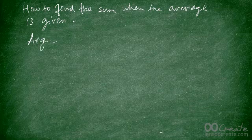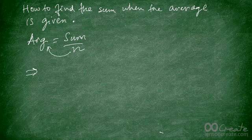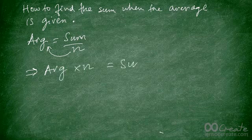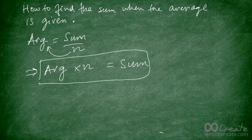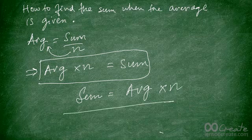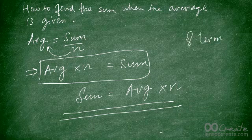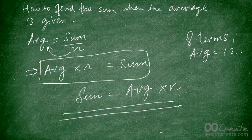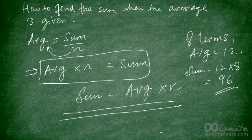Since the average equals sum divided by number, if we cross-multiply we get the formula: average multiplied by number equals sum. So anytime you want to find the sum of a set of data, you simply multiply the average by the number of terms. For example, if there are 8 values and the average is 12, then the sum is 12 times 8, which equals 96.